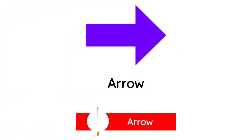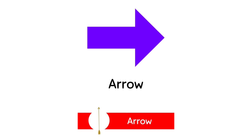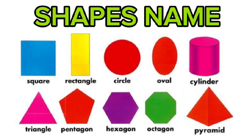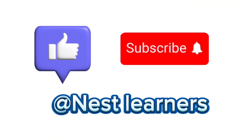This is octagon. This is arrow. So kids, these were the shapes names. If you like this video, then please give it a like and do subscribe to my YouTube channel, that is The Next Learners. Thank you. Bye-bye.